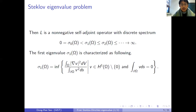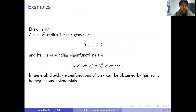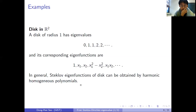As in many classical Laplacian eigenvalue problems, explicit computation of eigenfunctions and eigenvalues is difficult. There are very few examples which can be computed, and one example is the disk. A disk of radius 1 has eigenvalues 0, 1, 1, 2, 2, and all natural numbers with multiplicity 2. Its corresponding eigenfunctions are harmonic homogeneous polynomials, which are rather easy to write down.